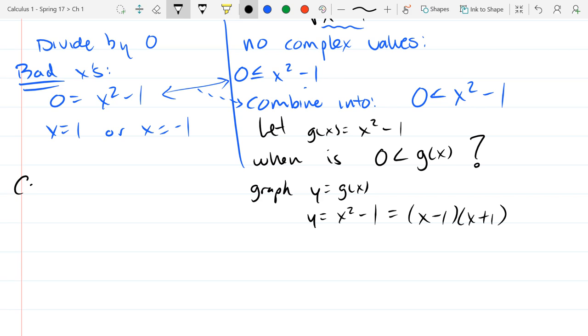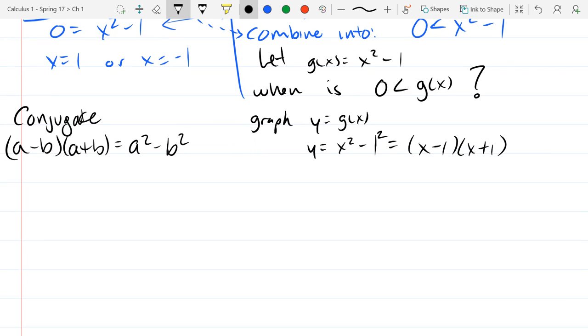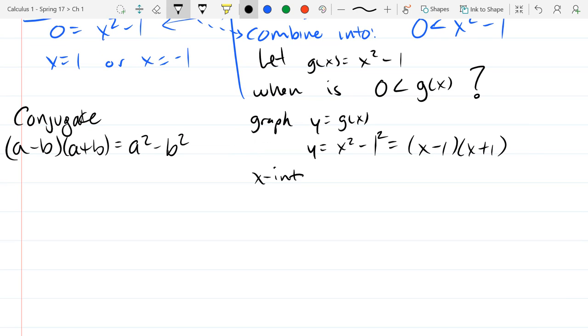We're going to graph it by factoring. So x squared minus 1 is a conjugate. And a really fast review on conjugate. Conjugates factor out very nicely. a squared minus b squared, it's also called difference of squares, factors a minus b times a plus b. Now, that 1 you could write as 1 squared. So this is x squared minus 1 squared. What are my x-intercepts? 1 and negative 1. x equals 1 and x equals negative 1.